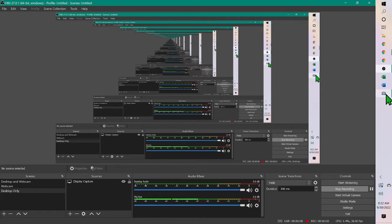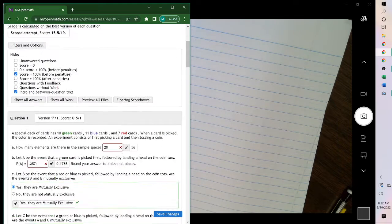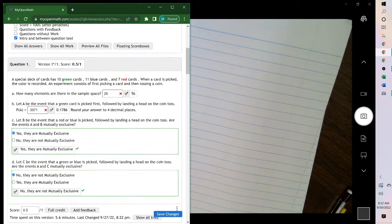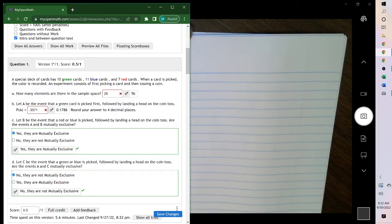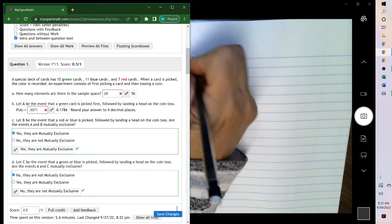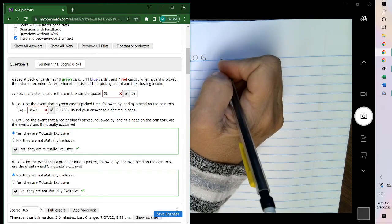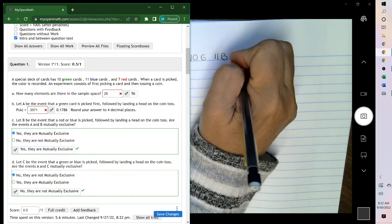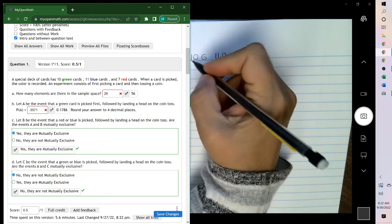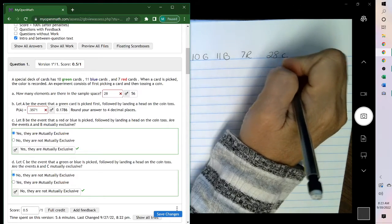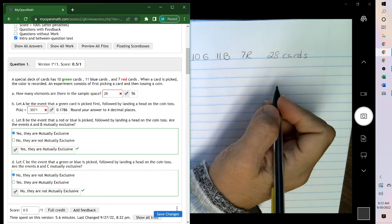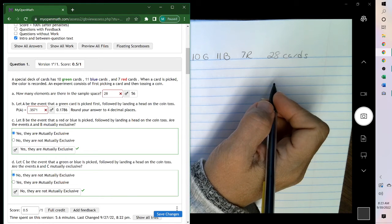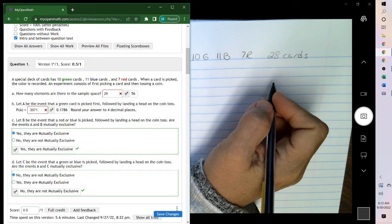Hello. For the ones that you missed, this one here. So we have 10 green cards, 11 blue, and 7 red. 10, 20, 28 cards. We're picking a card and tossing a coin.